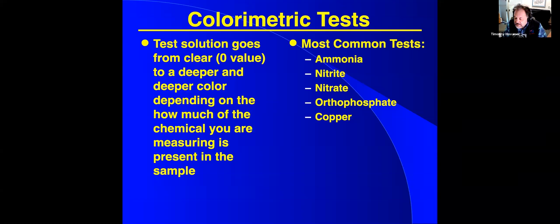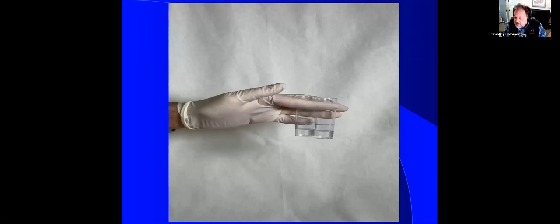Now we get into the heart of the matter, what we call these colorimetric tests. And basically, a colorimetric means that there's a color change. Your sample starts out clear, it's your aquarium water, it should be clear. And you're going to add some reagents, some chemicals in a specific sequence per the manufacturer. And after you add that last chemical, there's going to be a color change. And the more intense the color, the more of the chemical that you're measuring is present in your sample. So ammonia, nitrite, nitrate, phosphate, copper, these all are colorimetric tests. Now, here we have a little video and you'll be able to hear my voice.